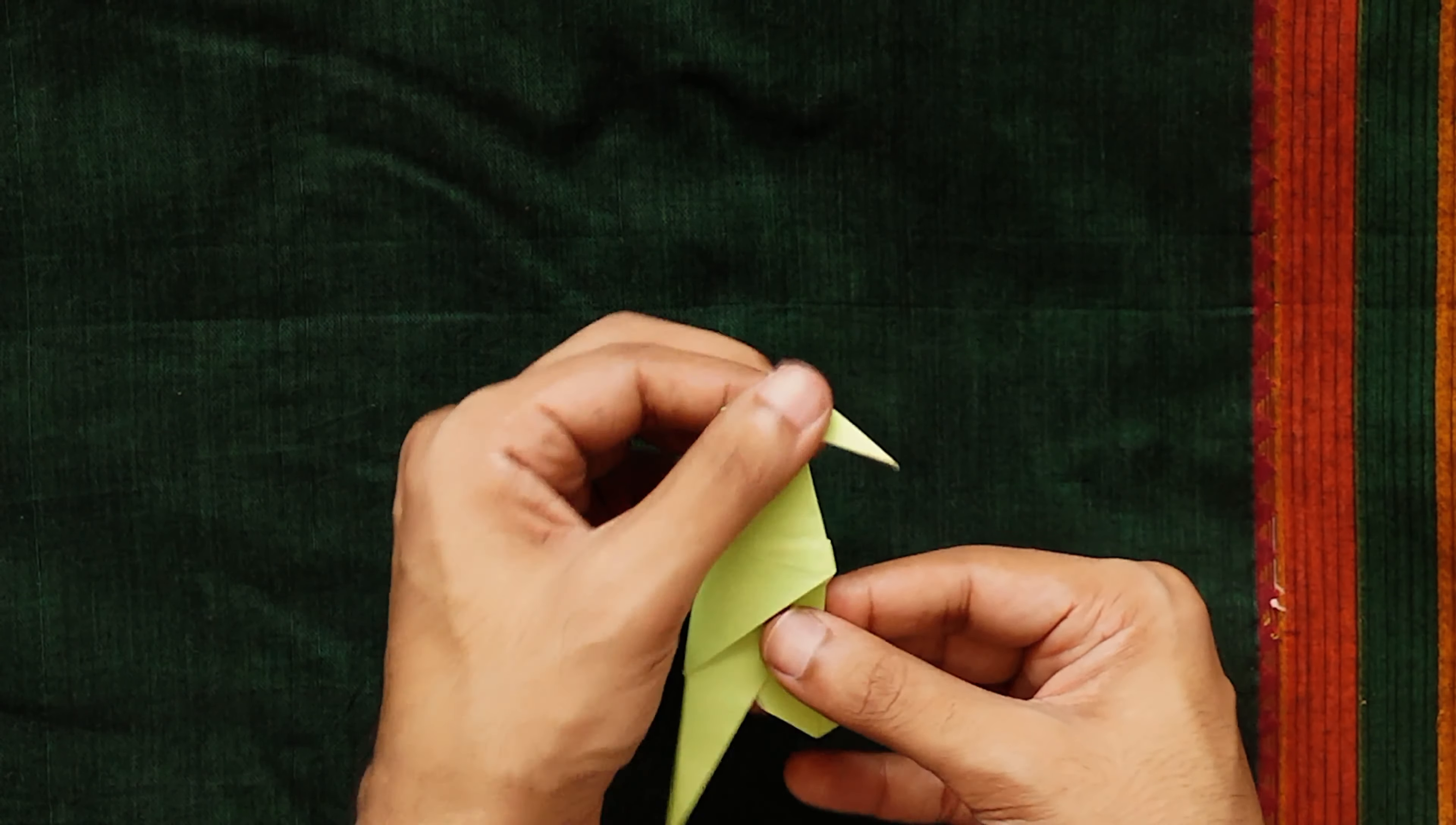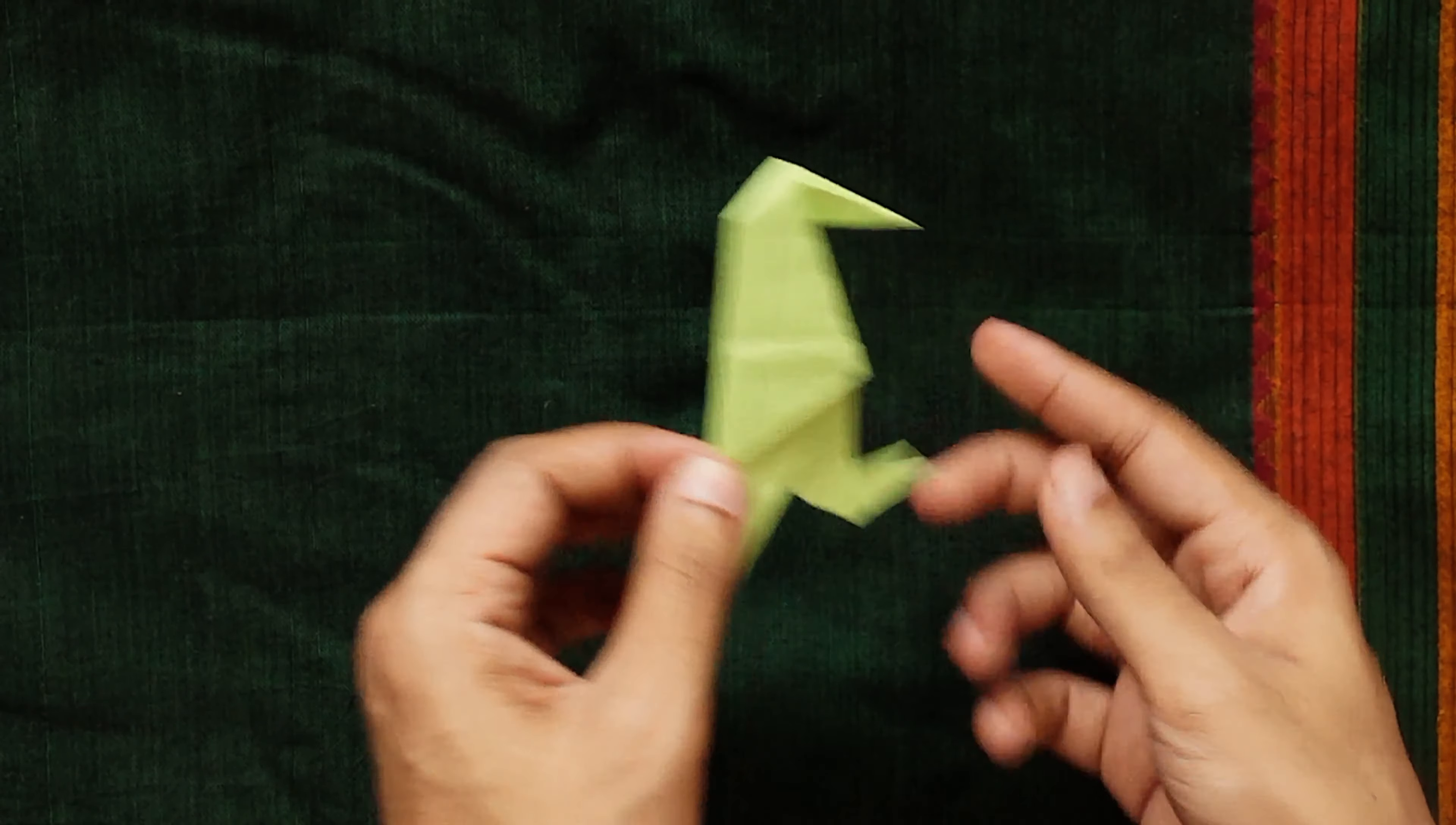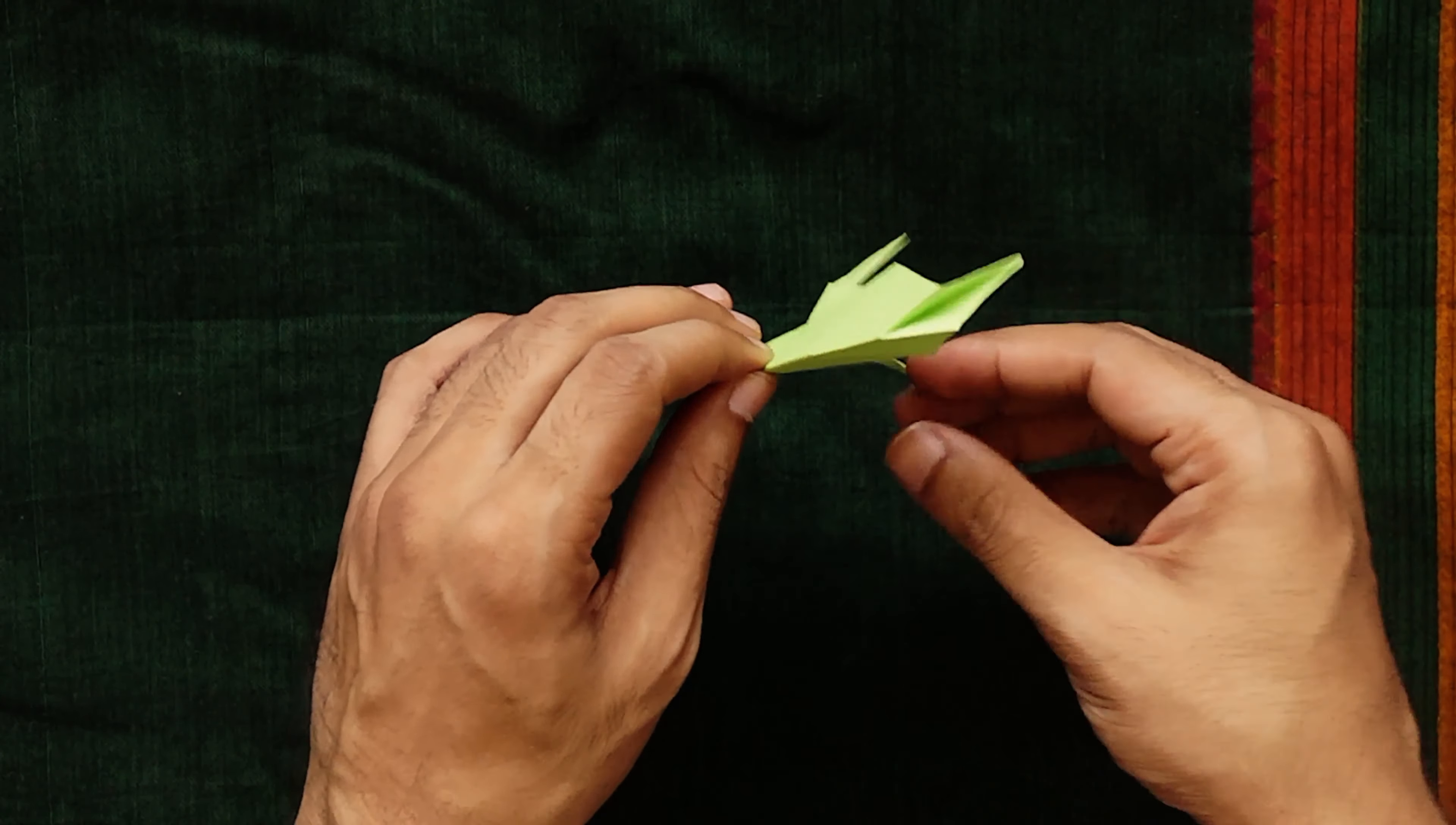Clean up the folds. Separate the legs a little for balance and your origami crow will gladly sit perched at the edge of things. Enjoy!